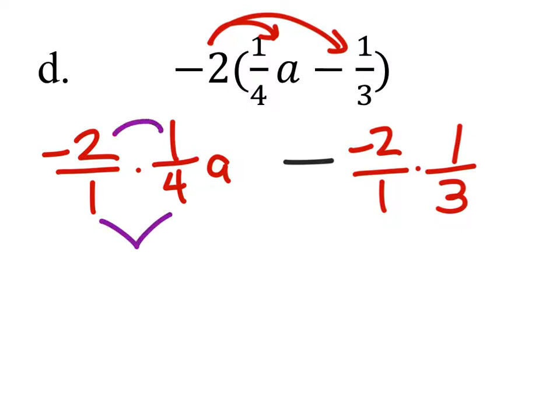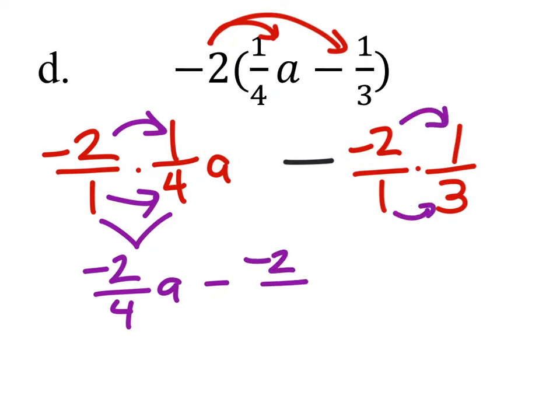When we multiply these, negative 2 times 1 is negative 2. 1 times 4 is 4. And that's an A. Minus negative 2 times 1 is negative 2. And 1 times 3 is 3.